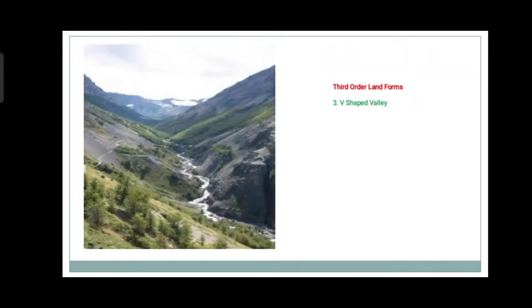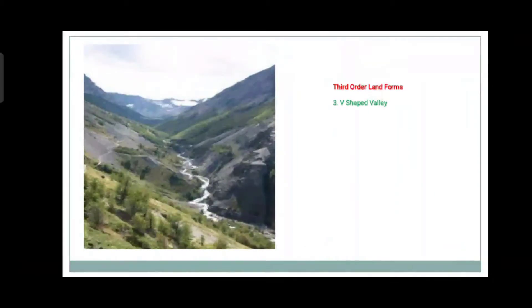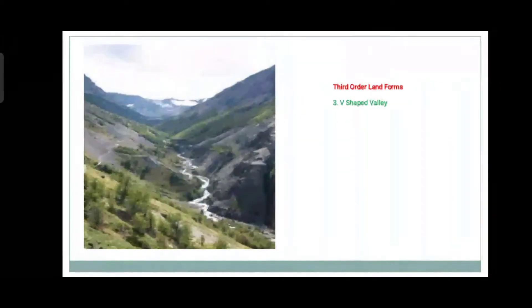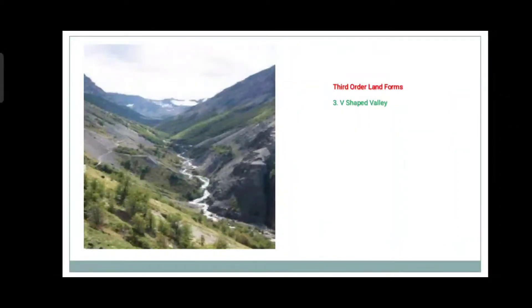The third type is the V-shaped valley. The flow of a river is very swift as it descends the steep slopes, and it exerts a great force in cutting the mountains vertically. These are called V-shaped valleys.